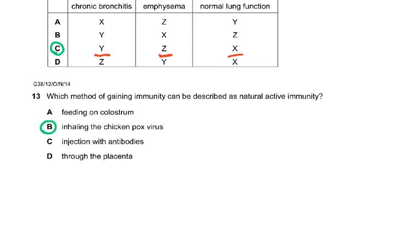Question 13: which method of gaining immunity can be described as natural active immunity? Inhaling the chickenpox virus — you'll suffer from the disease, be sick for 10 days, recover, and have natural active immunity. Natural means it's a natural way: the virus entered your system, you were sick for 10–15 days, and then you recovered. Your lymphocytes performed the activity naturally — nothing artificial — you just got the virus, maybe somebody sneezed, you were sick, and then recovered.